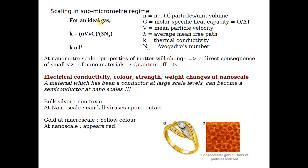Next, scaling laws in the sub-micrometer regime. We consider an ideal gas enclosed in a container and take the expression for thermal conductivity: K equals N v lambda C divided by 3 NA, where K is thermal conductivity, N is the number of gas molecules per unit volume, v is the mean particle velocity, lambda is the average mean free path — the distance traveled between molecules before collision — C is the molar specific heat capacity, and NA is the Avogadro number.